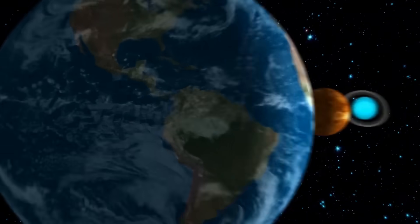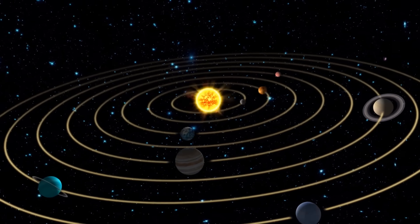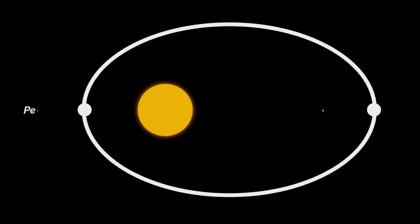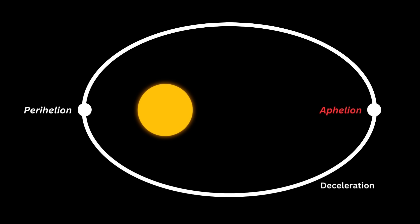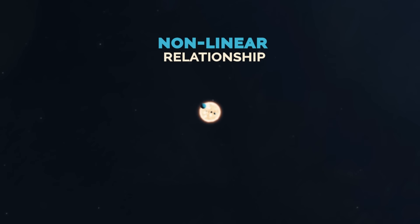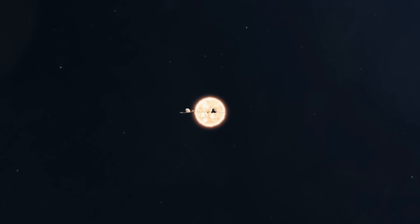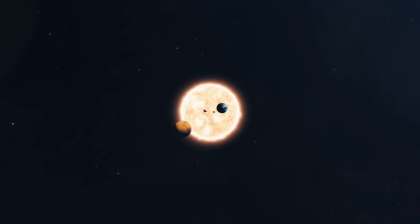The elliptical orbit not only defines the general shape of the planetary orbits, but also influences variations in orbital velocity. When a planet is closer to the sun, it experiences greater acceleration due to stronger gravitational influence. When it is farther away, it decelerates due to lower gravitational influence. This results in a non-linear relationship between the time a planet takes to complete its orbit and its distance from the sun. So although the planets revolve around the sun at different speeds, and although we're taught as children that all planets orbit in the same plane, the reality is that they do not.